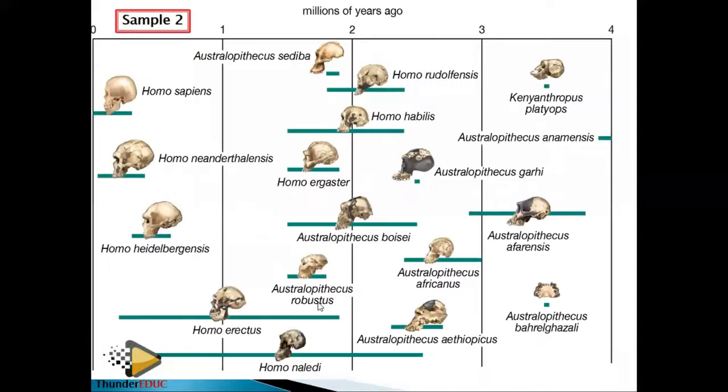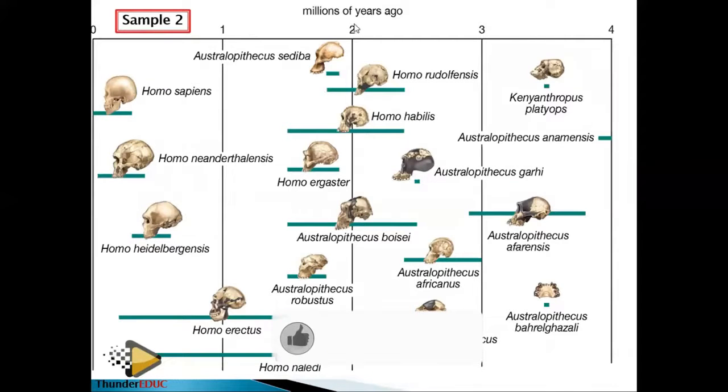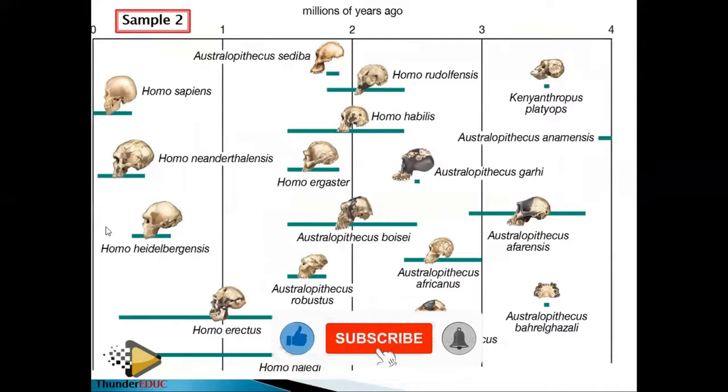In this tree, zero is on this side on top, and then one, two, three, four — these are million years ago on the scale.